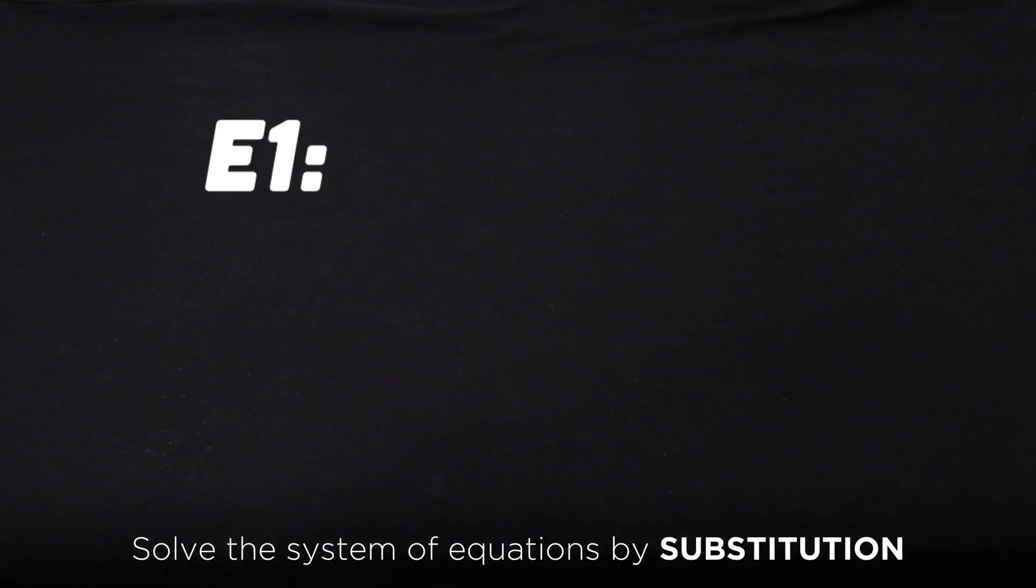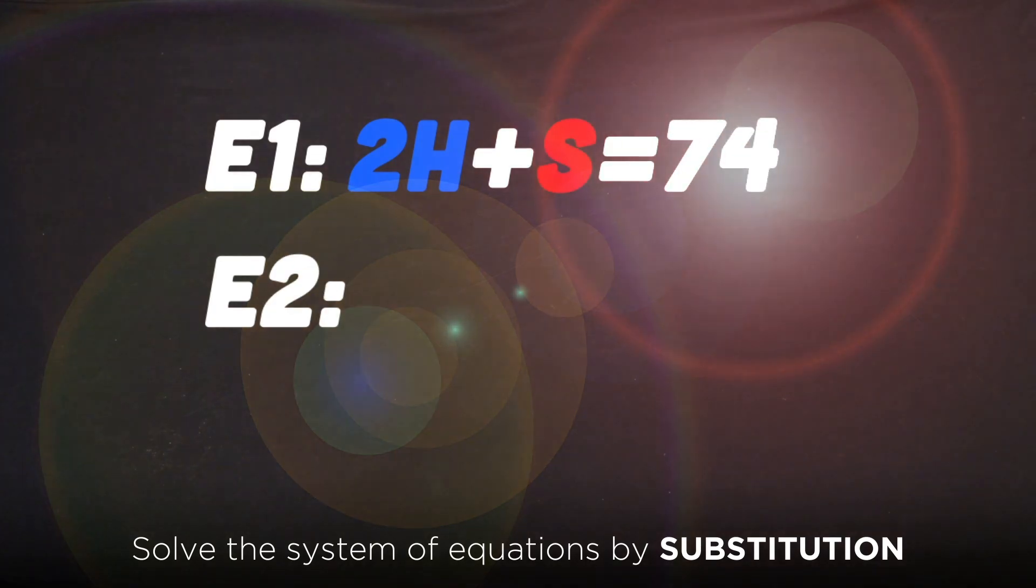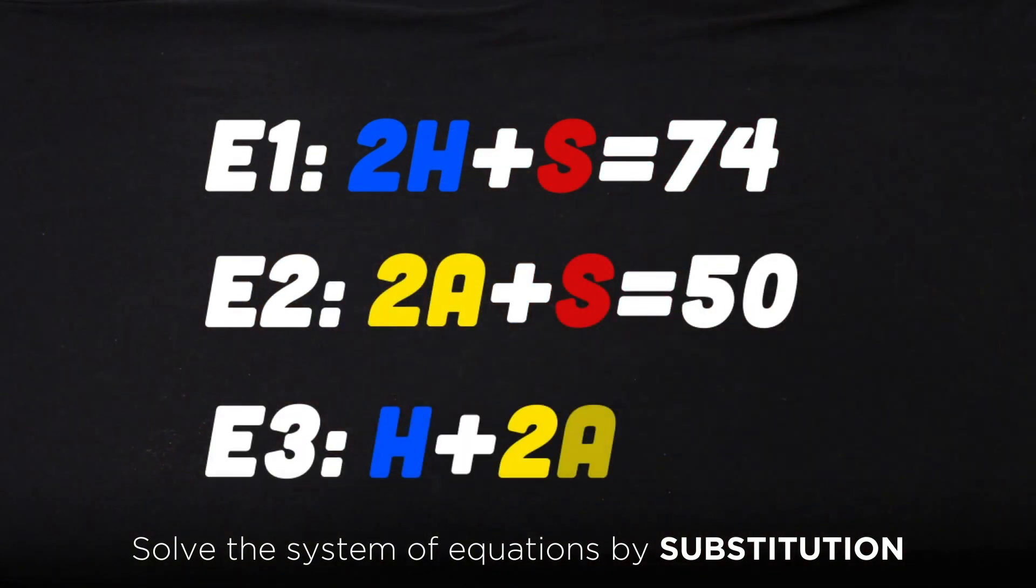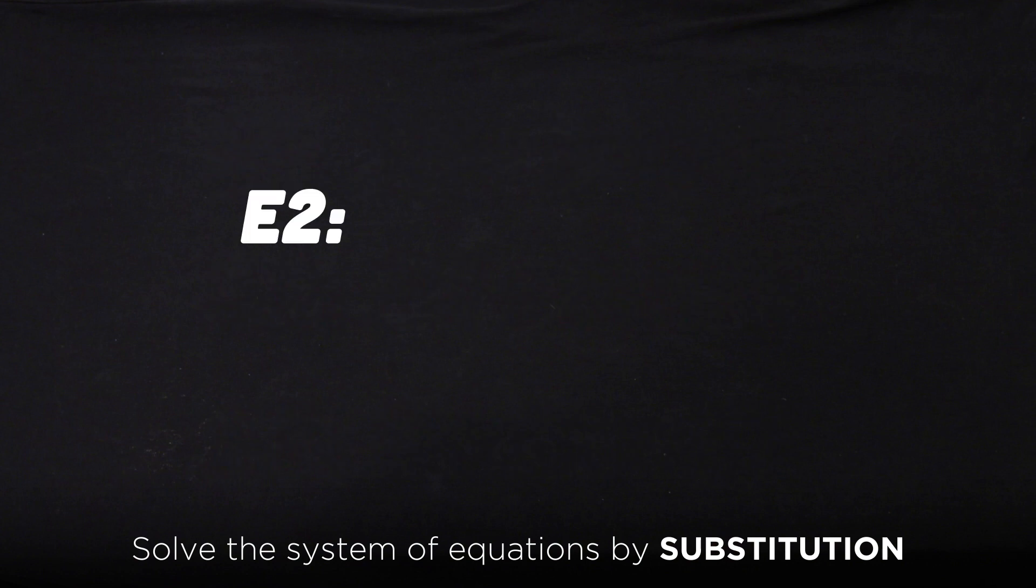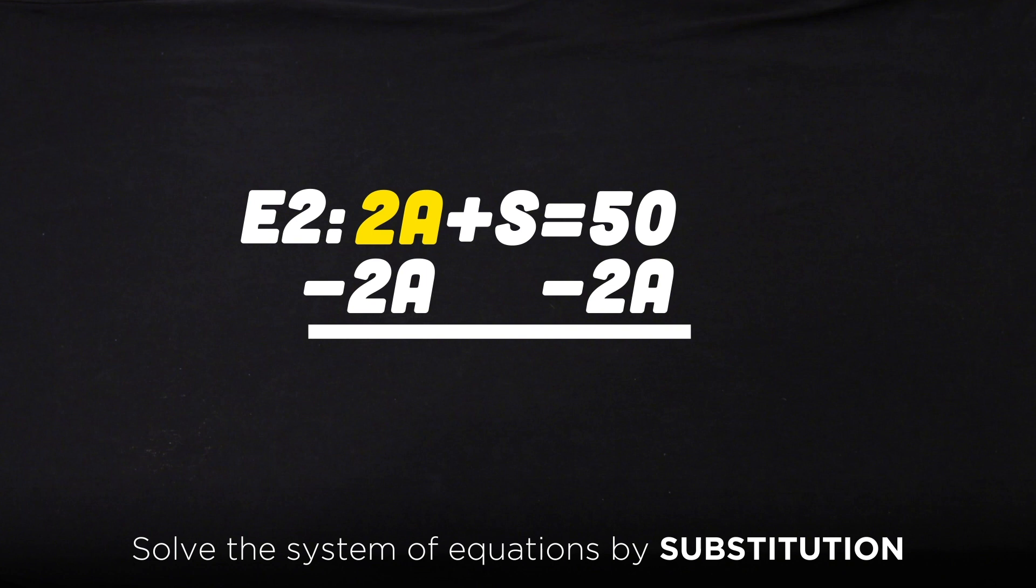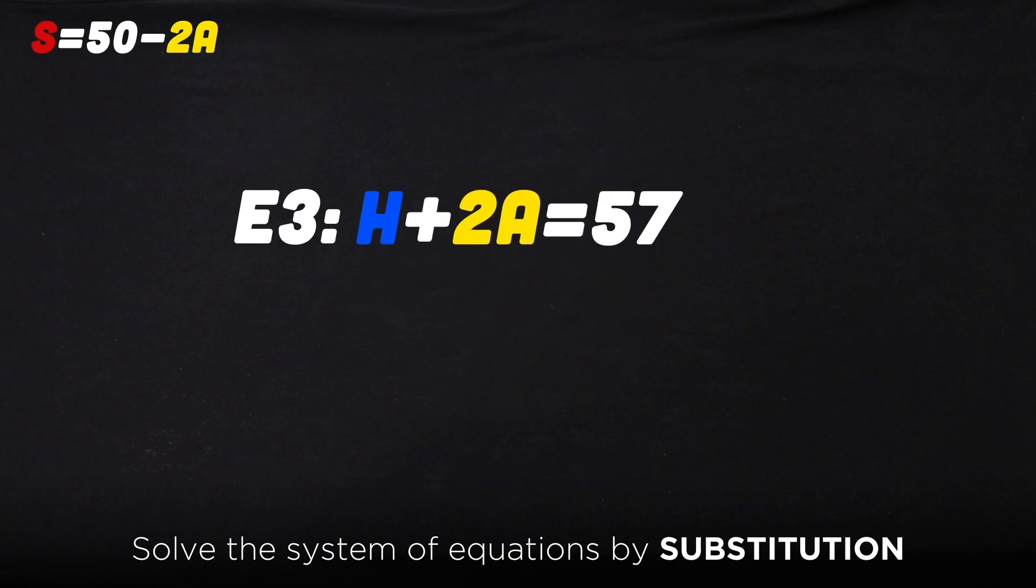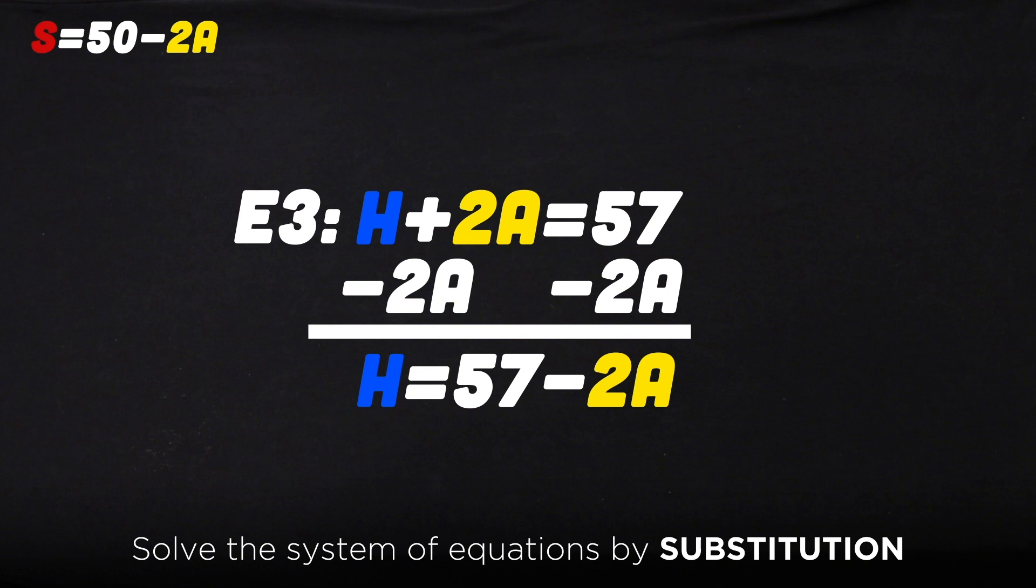The three equations are 2H + S = 74, 2A + S = 50, and H + 2A = 57. In this equation, 2A + S = 50, to isolate S subtract by 2A on both sides. Then you are left with S = 50 - 2A. Good job! You look at equation 3 and subtract by 2A on both sides. You are then left with H = 57 - 2A.